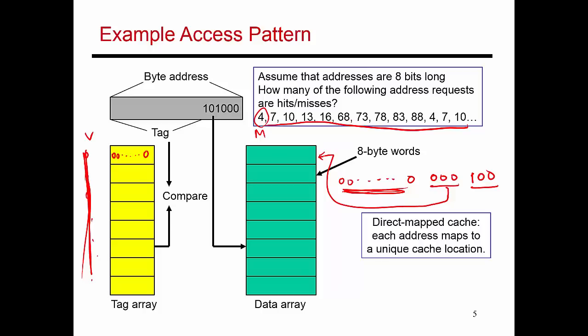And in this case, since I'm addressing byte 4, I'm going to look at these offset bits, and that tells me that byte number 4 is what I'm going to send back to the CPU. So this is how this entire data access is handled.